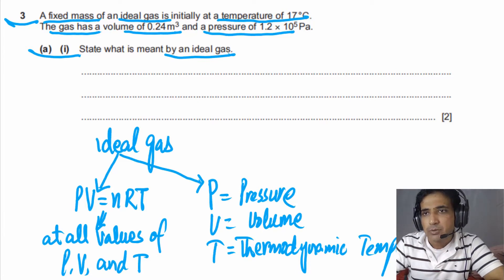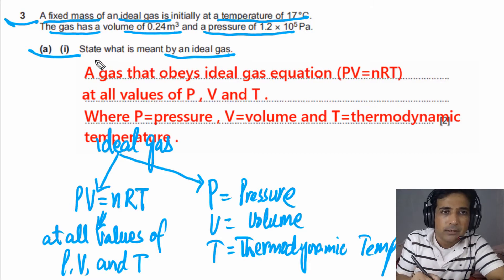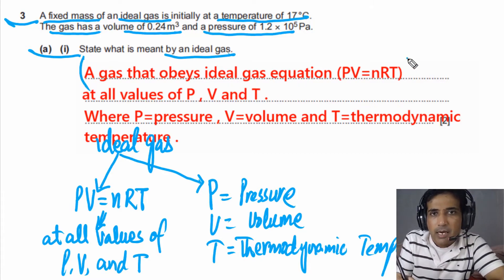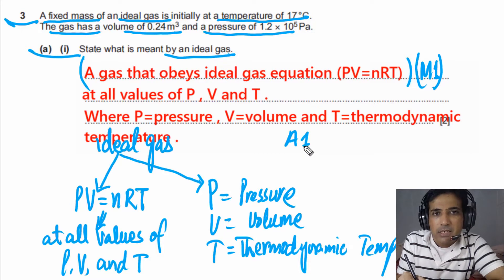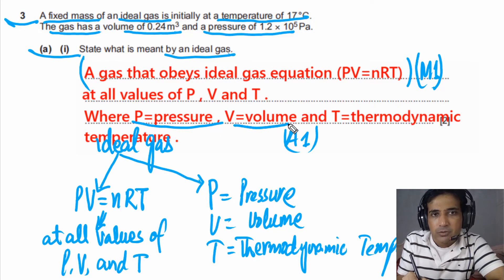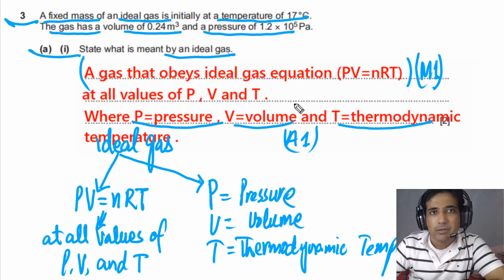Here is how you can write down a proper answer. If you have mentioned that a gas obeys the ideal gas equation, you will get one mark — this is the M mark, meaning it must be in your answer. The second mark is the A mark: if you have written P equals pressure, V equals volume, and T equals thermodynamic temperature, you will get the second mark. This is how marks will be awarded for this question.